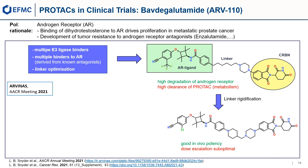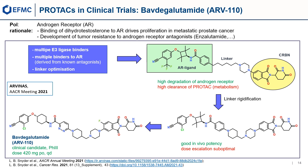However, dose escalation was still suboptimal, probably due to limited solubility. Small variations in ligand binding parts led to bavdegalutamide. The oral dose in the clinic is 420 mg once daily. In accordance with the outlined chemical property space for oral bioavailability, the CEREBLON-based PROTAC has a molecular weight of 812, only two H-bond donors, and a polar surface area of 180 square angstroms. One can assume that the rigid linker reduces metabolism and increases affinity and solubility via the piperazinyl moiety. This moiety, attached to position 5 of the phthalimide ring, and the neighboring fluoride might also prevent any molecular glue effects of the CEREBLON-binding PROTAC.